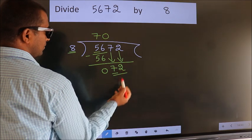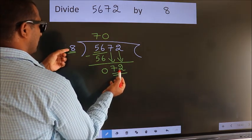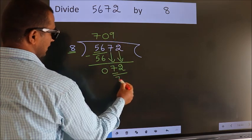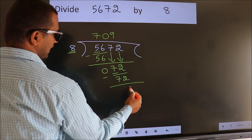Then only we can bring down this number. So, 72. When do we get 72? In the 8 table. 8 times 9 is 72. Now we subtract. We get 0.